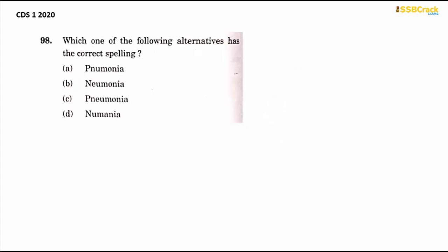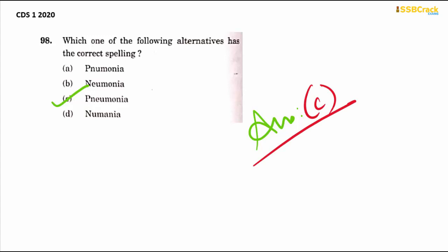Next is 'pneumonia' — another example of a silent P that should be used at the beginning. It is spelled P-N-E-U-M-O-N-I-A. The answer is option C.